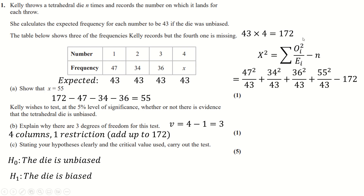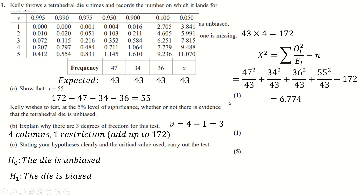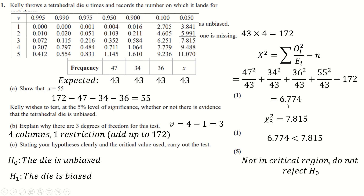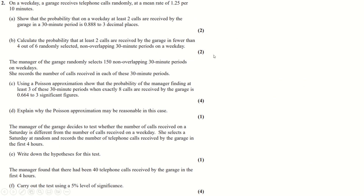We subtract 172 (the value of N) to get our chi-squared statistic. Looking up the tables for V=3 at 5% significance, our statistic is less than the critical value, so we are not in the critical region. We do not reject H0, and that is question one done.